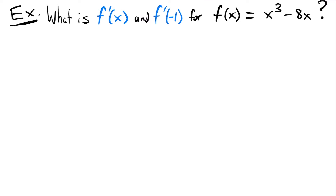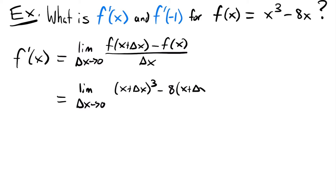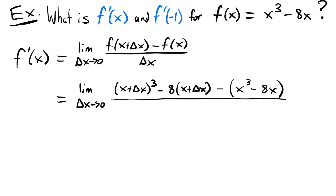I'm going to write our limit definition and fast forward to the actual evaluating. So now let's plug in our values. This equals the limit as delta x approaches 0 of (x plus delta x) to the third power minus 8 times (x plus delta x) — we plugged x plus delta x into each x in the function — then subtract the original function in parentheses, all divided by delta x.